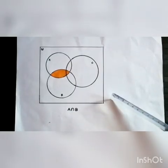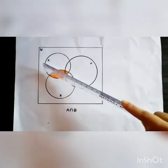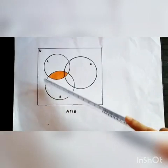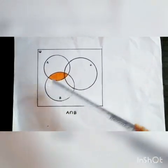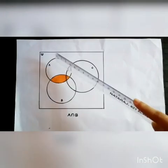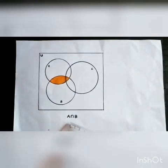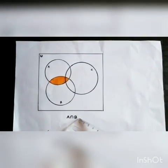This is the Venn diagram for A intersection B. This is set A, this is set B, and this is set C. This shaded region shows the intersection of two sets A and B, which we can write as A intersection B.